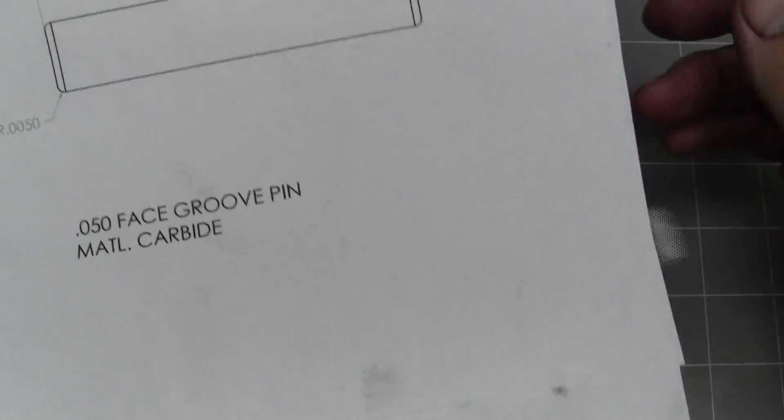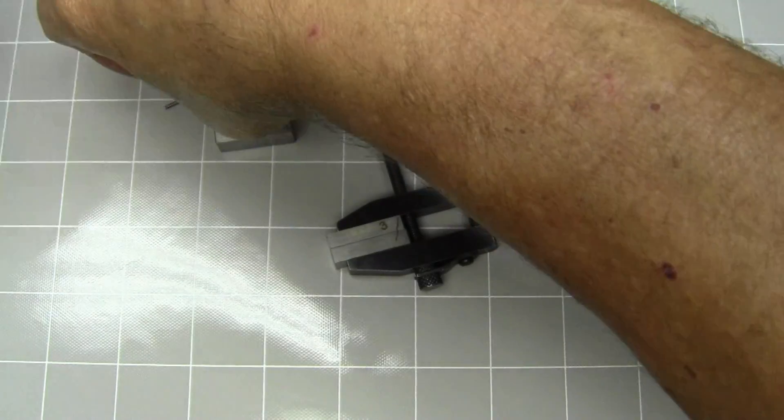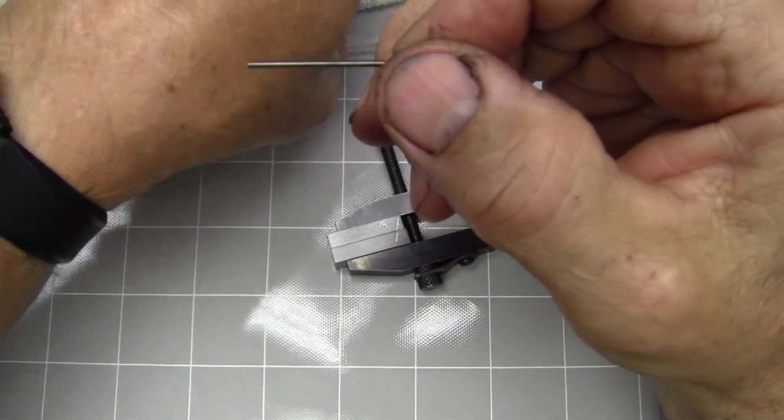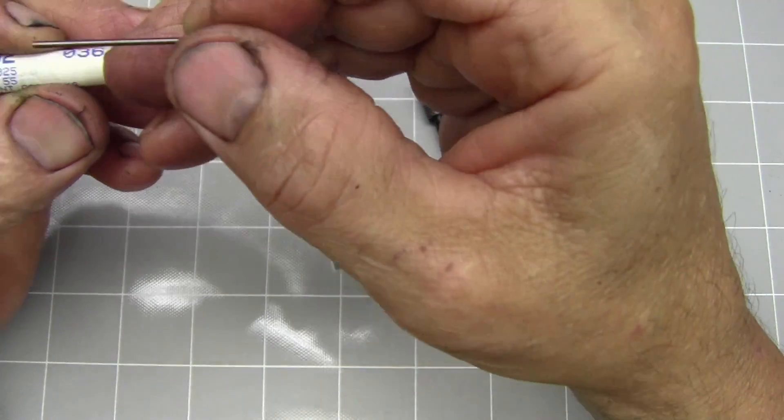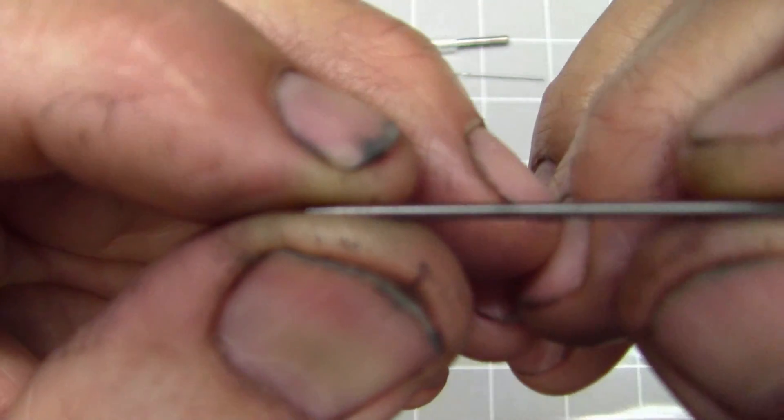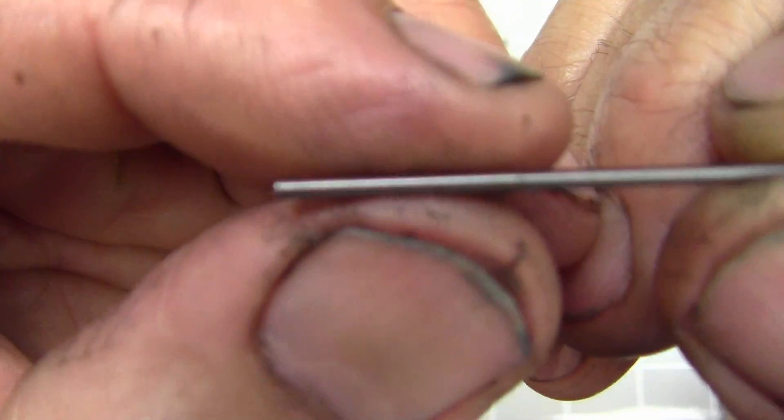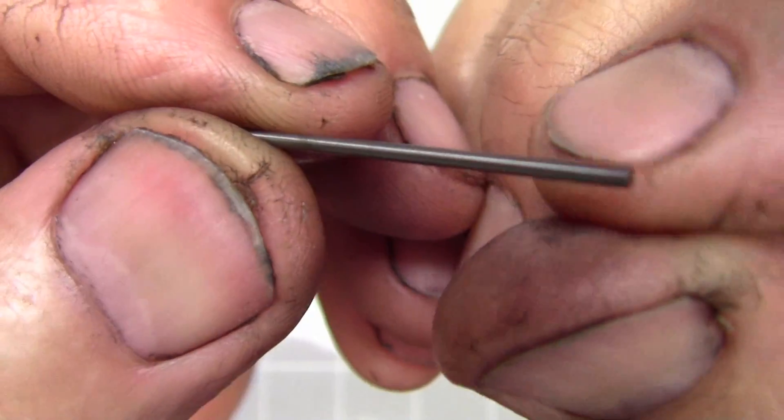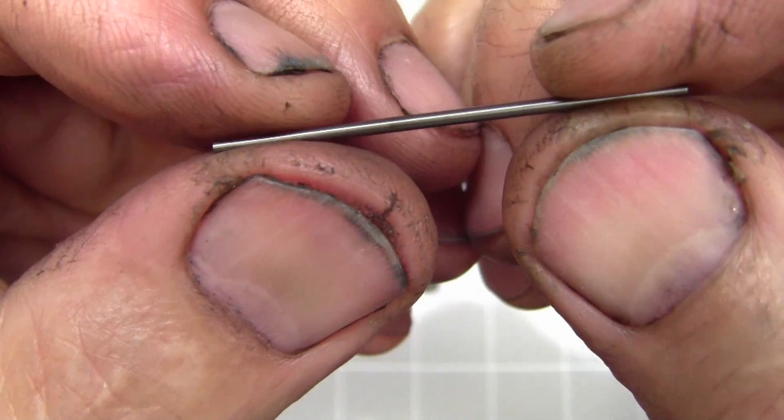So the finish on this isn't really all that great. It's not gauge quality, not to mention the fact that we have to get down to 50 thousands. So I'm making some laps to allow me to lap this down to 50.